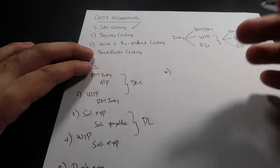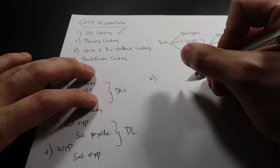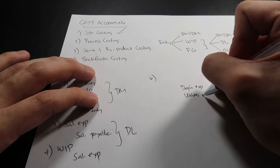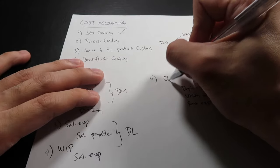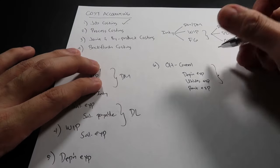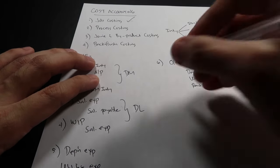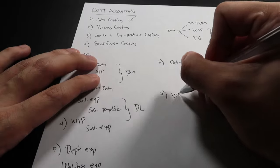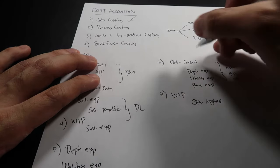We need to charge overhead into work in process, but for overheads there's a difference between actual costing and normal costing. For actual costing, we close the overhead expenses — credit depreciation expense, credit utilities expense, credit rent expense — but instead of charging this directly to work in process, we charge it to OH Control, which is a temporary account holding actual overhead costs.